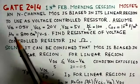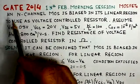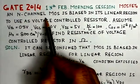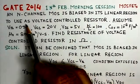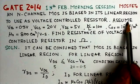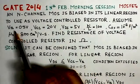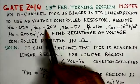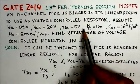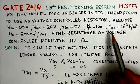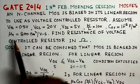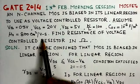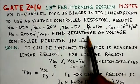The question states: An n-channel MOSFET is biased in its linear region to use as a voltage controlled resistor. Assume Vth = 0.5 volts, VGS = 20 volts, VDS = 5 volts, W/L = 100, Cox = 10^-8 Farad per meter square, and μn = 800 cm²/V-s. Find the resistance of the voltage controlled resistor in ohms.